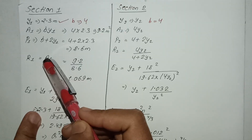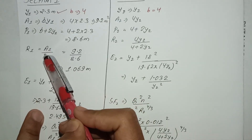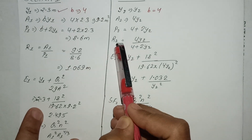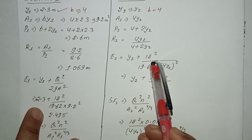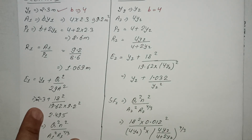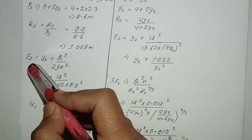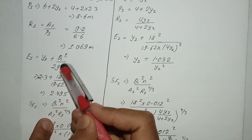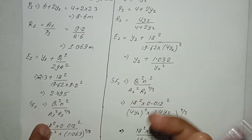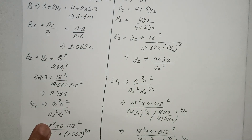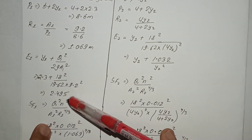The hydraulic radius R1 equals A1 divided by P1. Similarly, R2 equals A2 divided by P2. The specific energy E1 equals y1 plus Q squared divided by 2g times A squared, and E2 is computed at section 2.